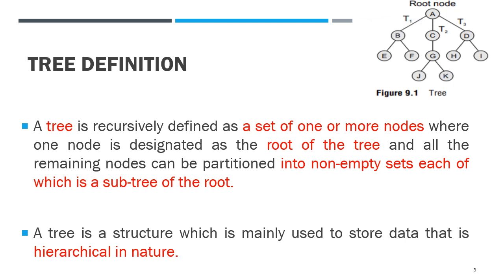A tree is recursively defined as a set of one or more nodes. The nodes are arranged in a circular or hierarchical structure. The tree will have either one node or more nodes. One of the nodes is the root node, and all the remaining nodes form subtrees attached to that root node.